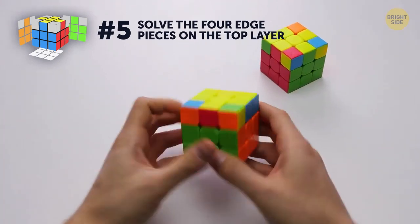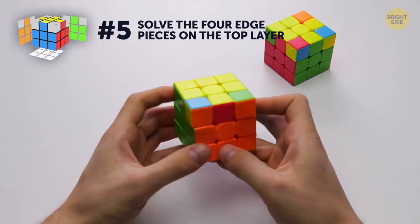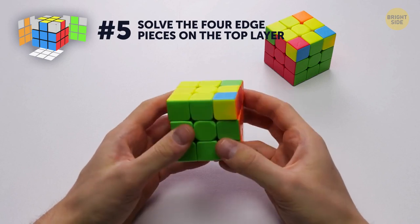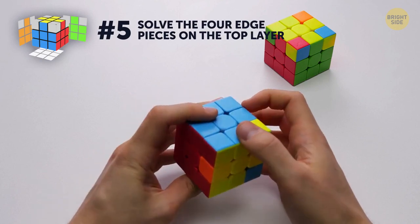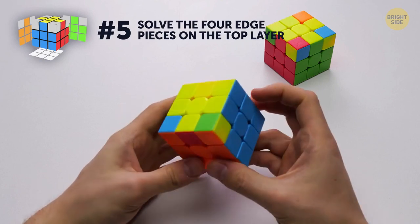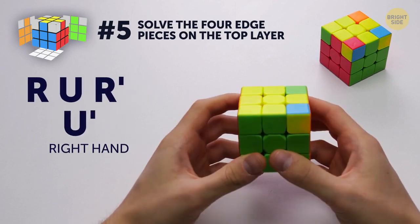Let's get started. Find one edge that's already in place. Rotate the top layer of the cube to align the edge with the corresponding color. It's important that only one edge is matching. If two of them match, you should use a slightly modified algorithm to mix the edges.